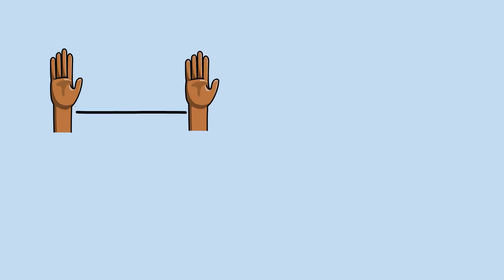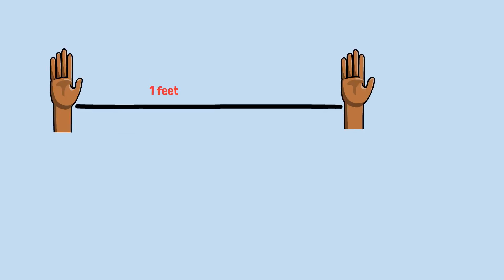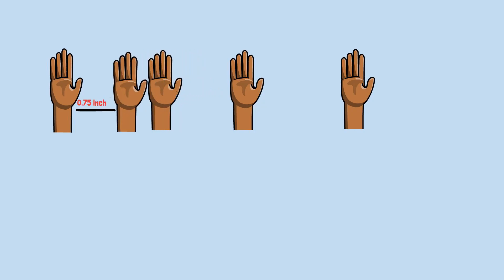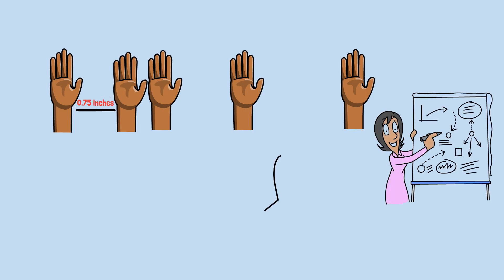Then move it halfway again through the remaining distance, then halfway again and again and again. Following this rule, you'd first move your hand one foot closer, then six inches closer, then three inches, then one and a half inches, then 0.75 inches.